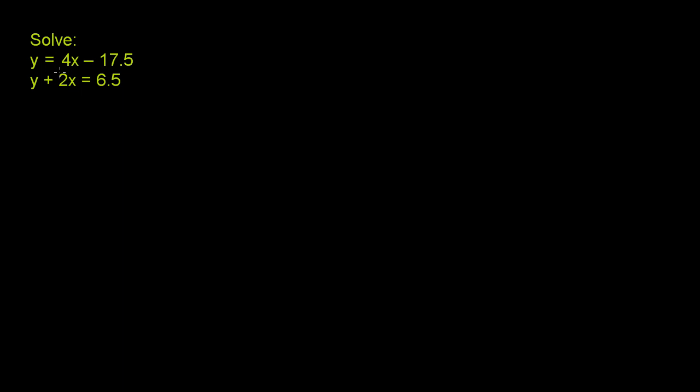We have the system of equations: y is equal to 4x minus 17.5, and y plus 2x is equal to 6.5. And we have to solve for x and y.